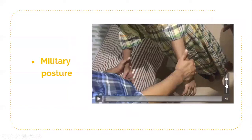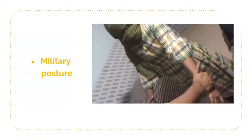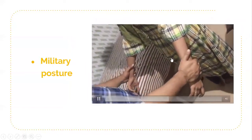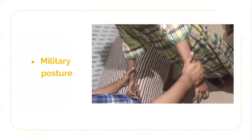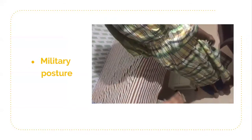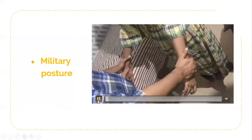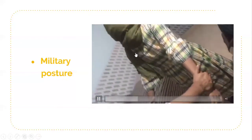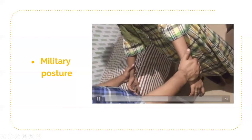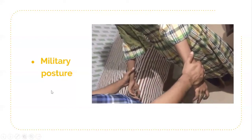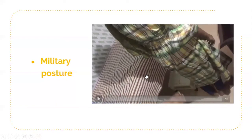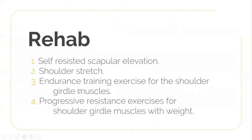The last test is the Military Posture test, in which the shoulder is extended to 30 degrees and both radial pulses are checked. The cervical spine is held in extension in this position. The affected side pulse will be reduced compared to the normal side.